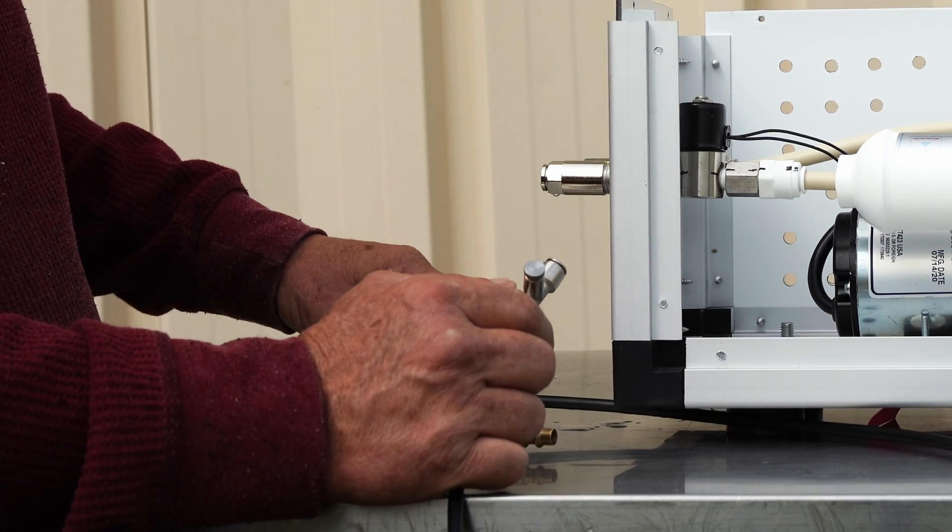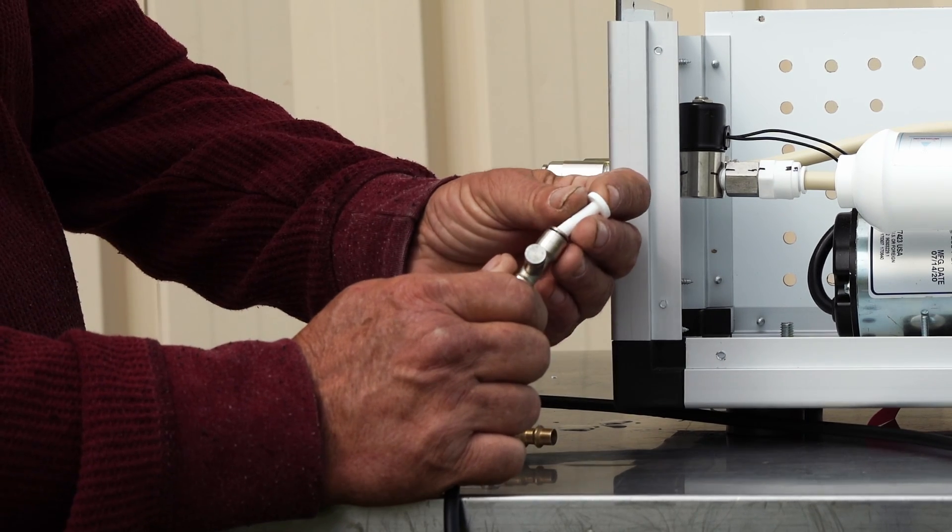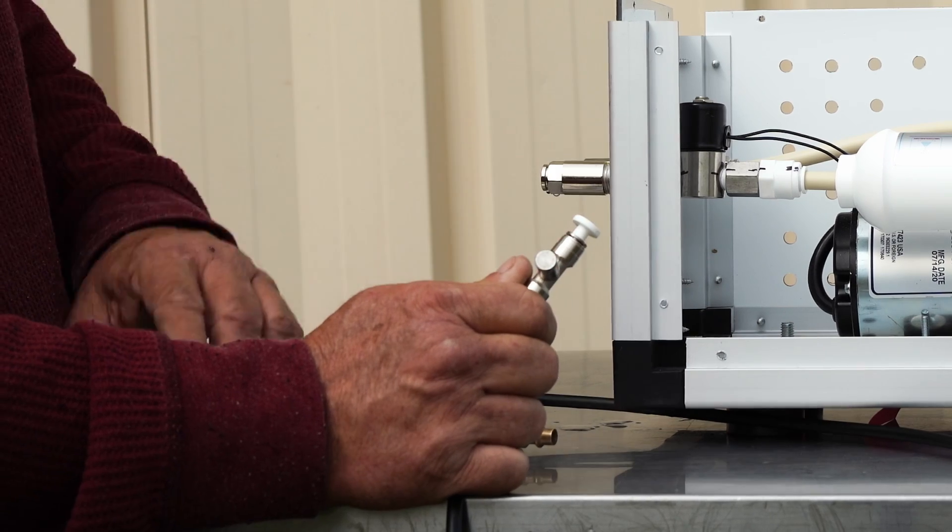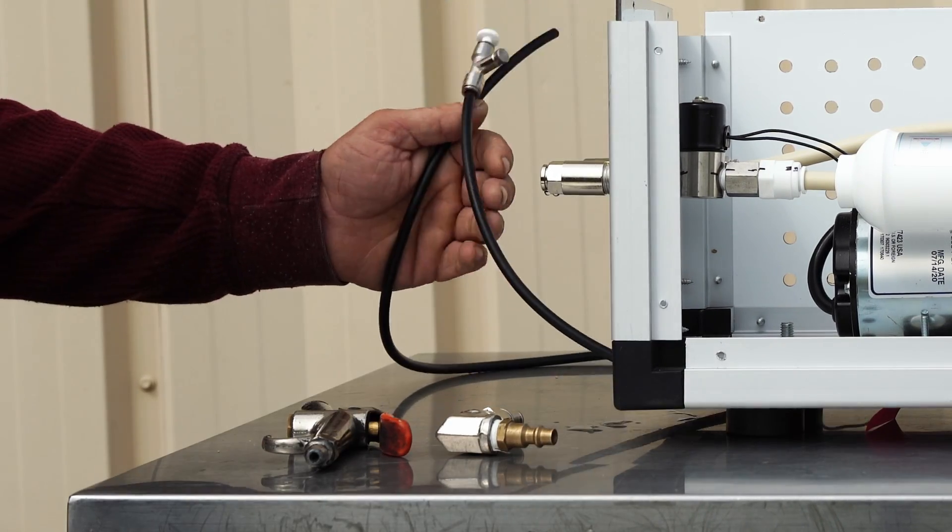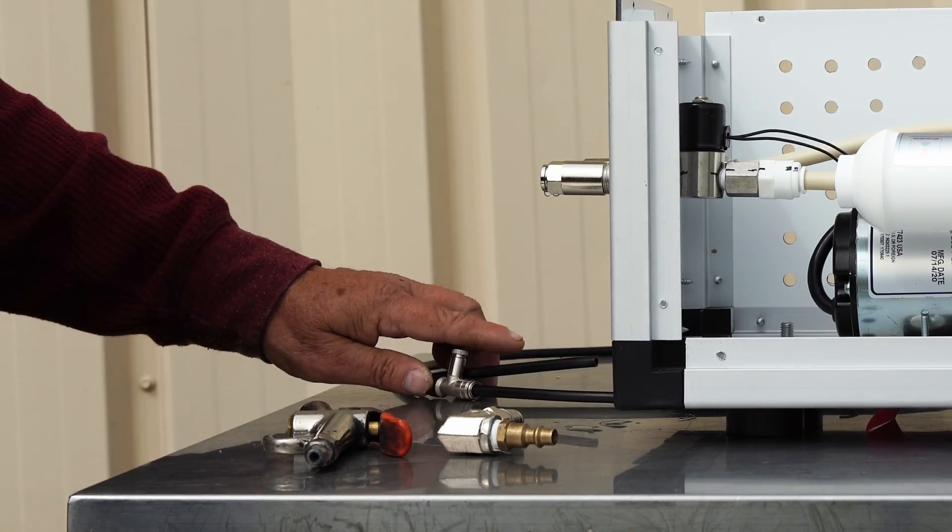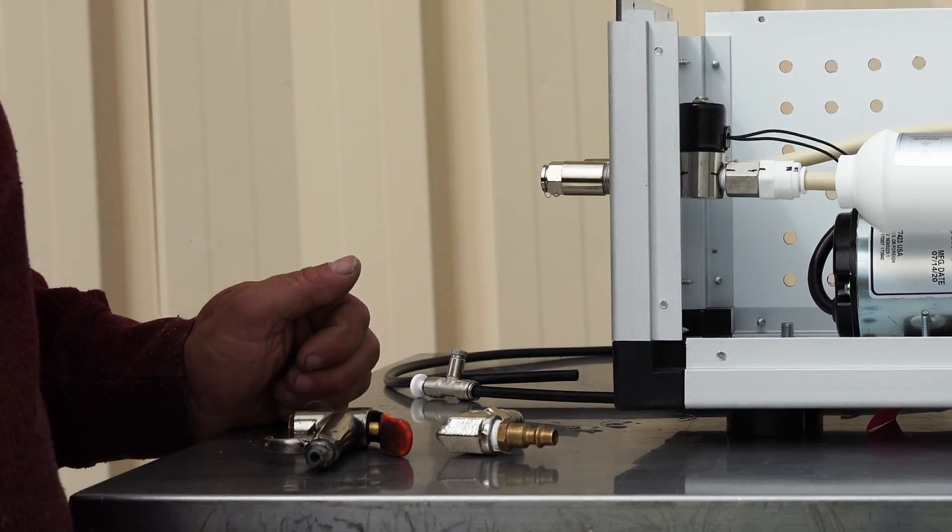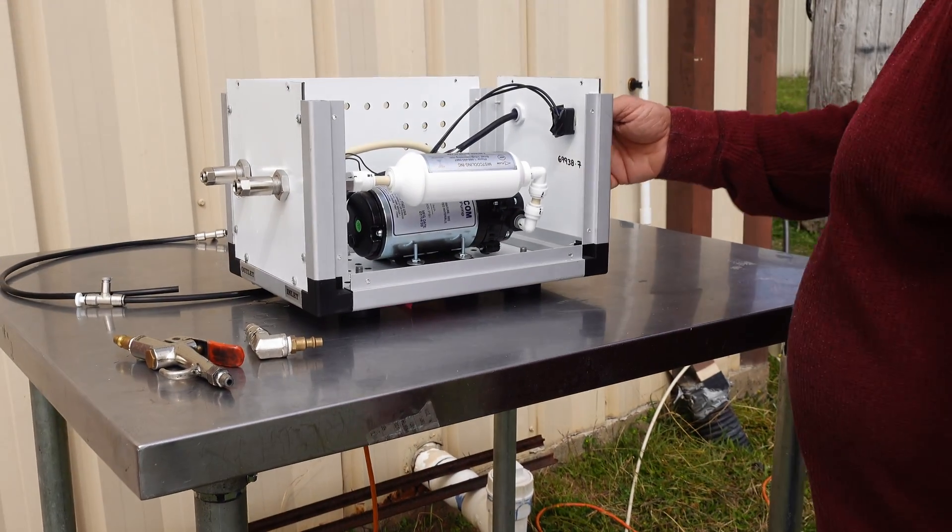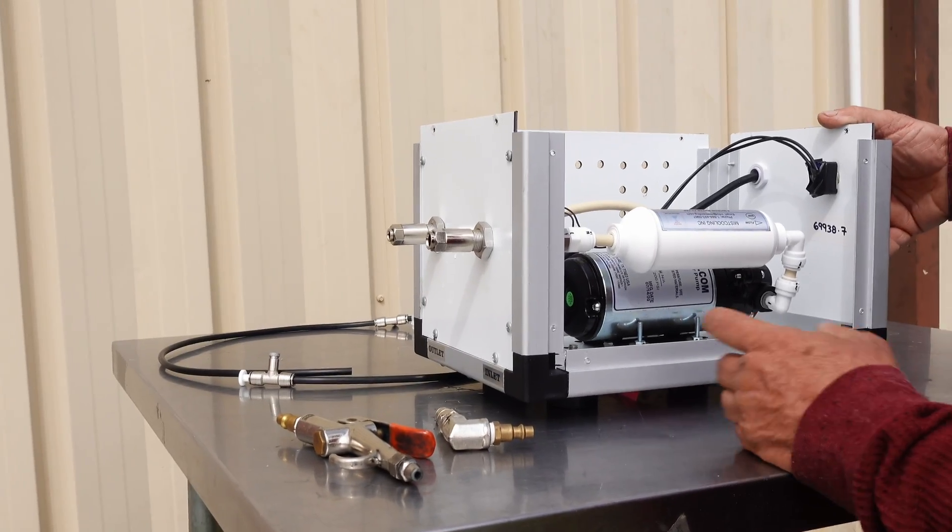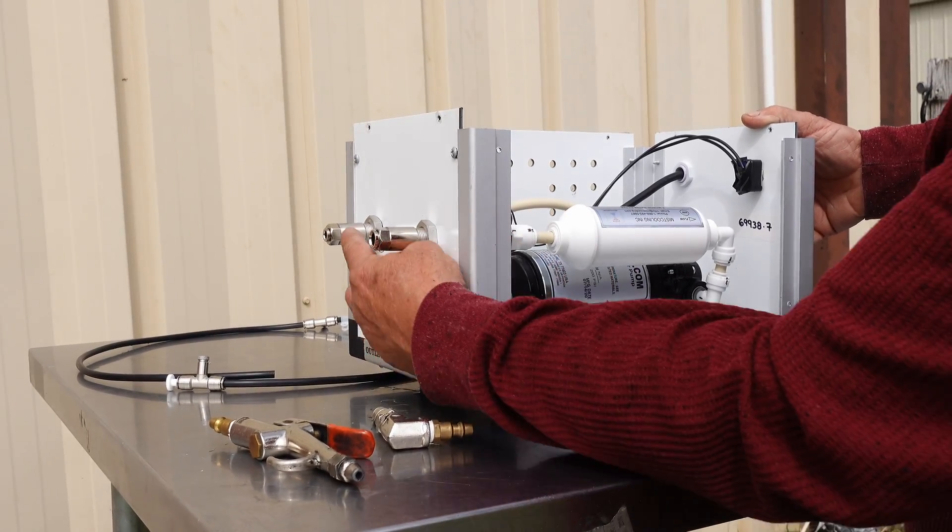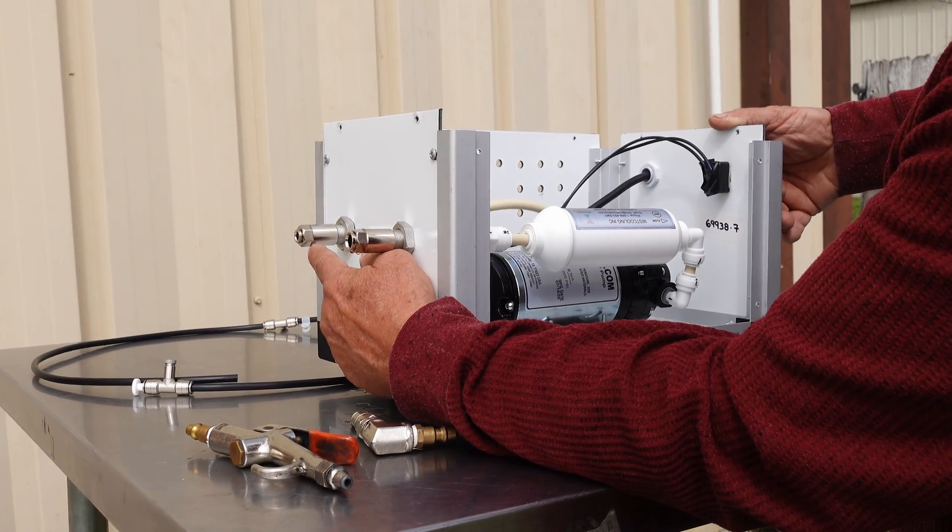After you're done, put your end plug back in so you don't lose it. Then on your pump, simply turn the toggle switch on and let it pump all of the water out of the outlet side.